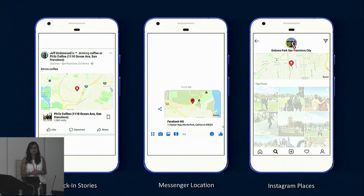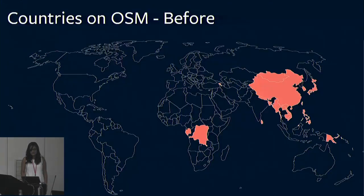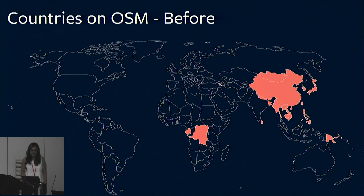If you've seen it, then you know that we're predominantly a display feature. While we're not an exact product within Facebook, we do support a lot of the products that need a map surface. Last year when we talked about OSM, we mentioned that we were rolling out and we were in about 22 countries — these are the countries that we were running on OSM.